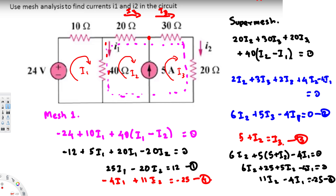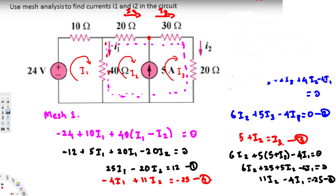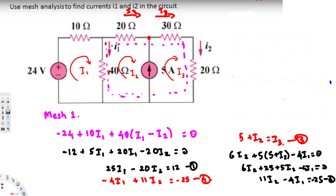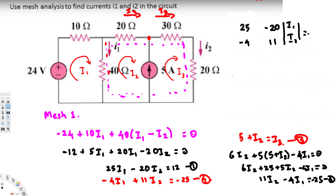Now we have two equations with two unknowns. Equation one: 25·i1 minus 20·i2 = 12. Equation four: negative 4·i1 + 11·i2 = negative 25. We can solve this using Cramer's rule. Setting up the coefficient matrix: [25, -20; -4, 11] multiplied by [i1; i2] equals [12; -25].